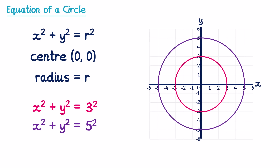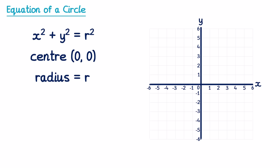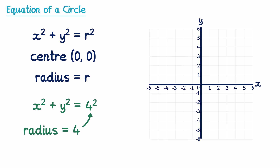The way these equations have been written is fairly uncommon though. You are more likely to see an equation written in the form x² + y² = some number. To find the radius of this circle, we need it to be equal to r², so we need to rewrite the 16 as something squared. The square root of 16 is just 4, so we rewrite 16 as 4², which means the radius of that circle is 4.